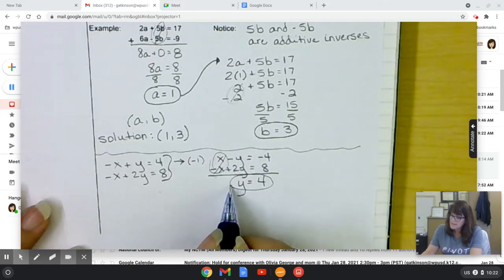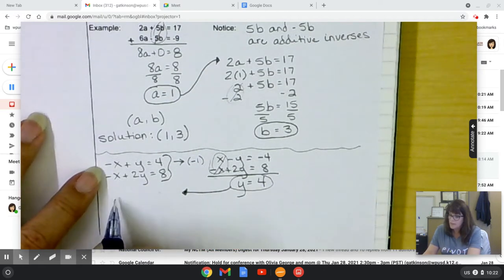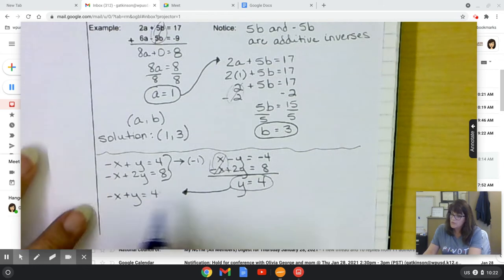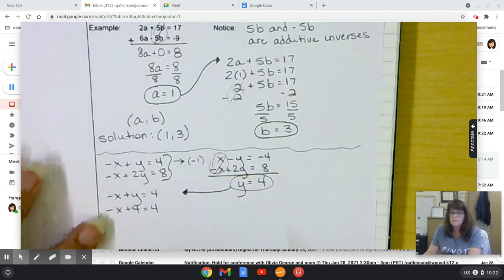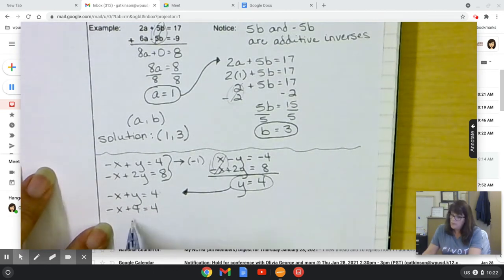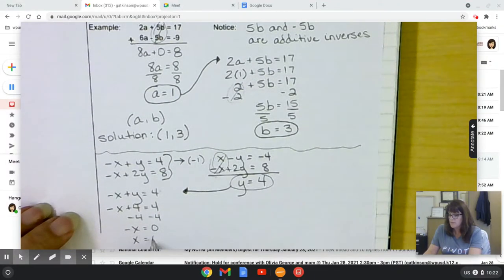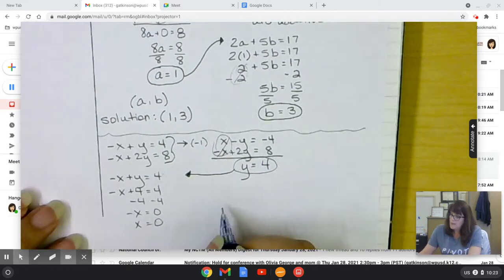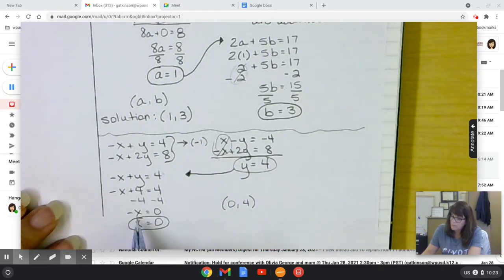Now I could take this, put it into one of the other equations. Doesn't really matter which one. Negative x plus y equals 4. And this says y equals 4. Negative x plus 4 equals 4. Subtract 4 on both sides. Negative x equals 0. Oh, that's cool because that also means that x equals 0. Zero is an okay answer. It's a number. And my solution would be 0, 4.